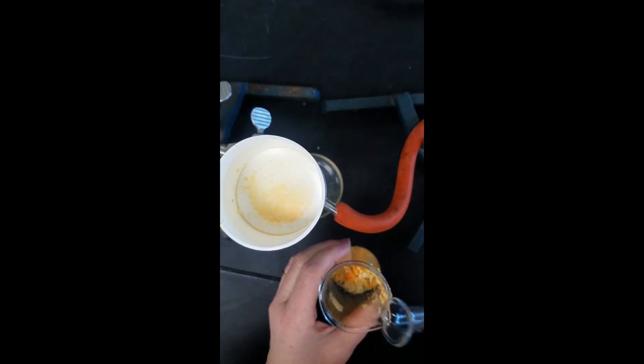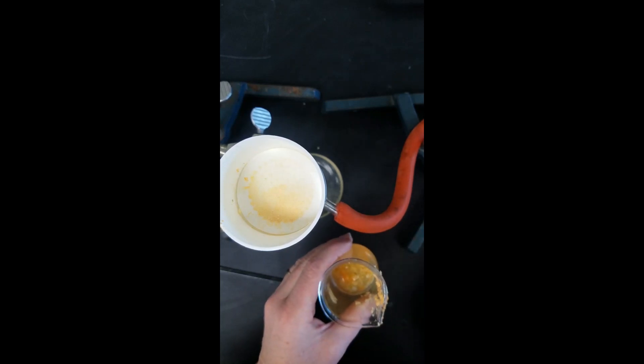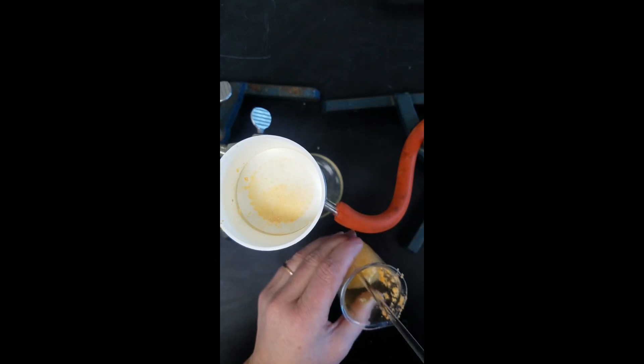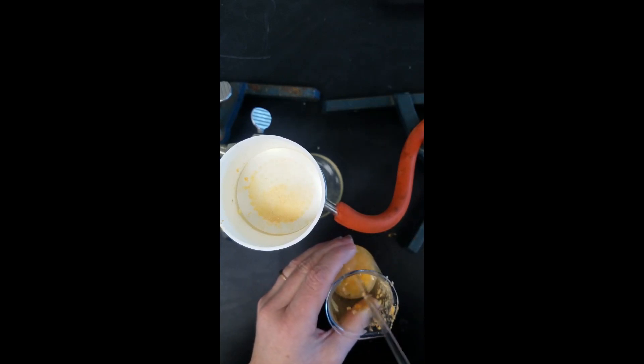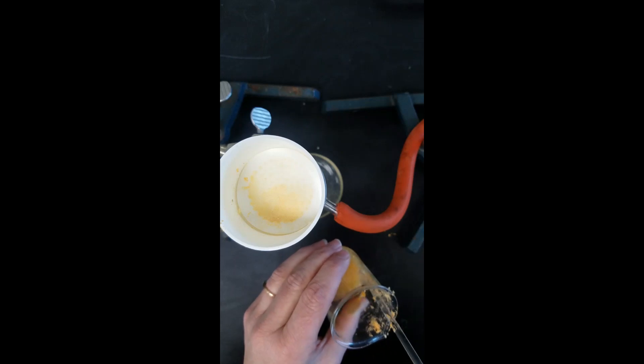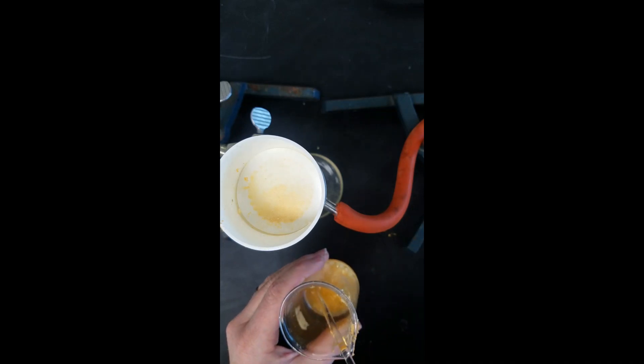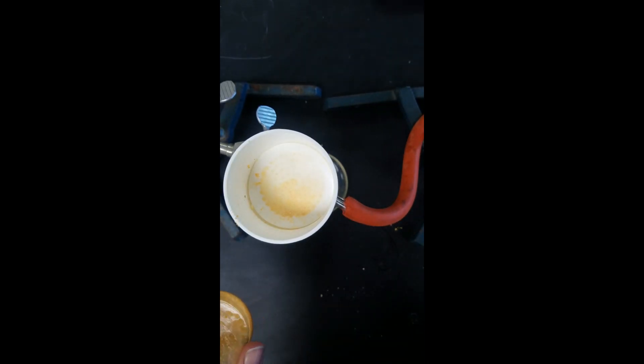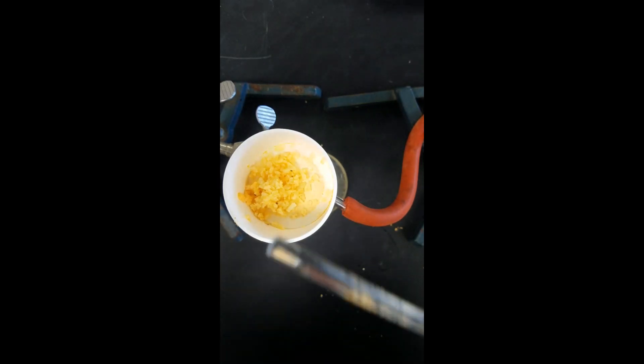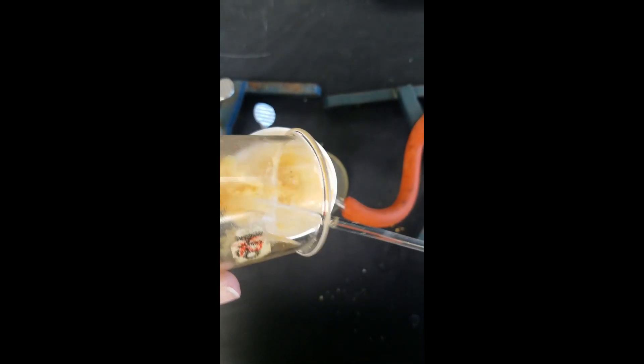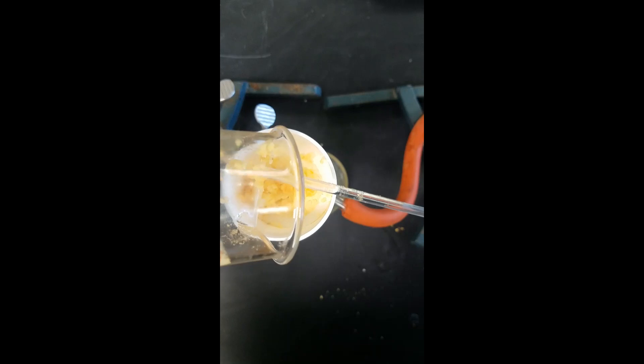This is the second addition of the petroleum ether, and we're going to stir this for a minute again. Pouring the second addition of petroleum ether into our filter. And we're going to allow the vacuum to run again to draw that petroleum ether out for another minute.